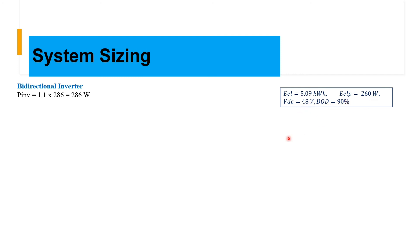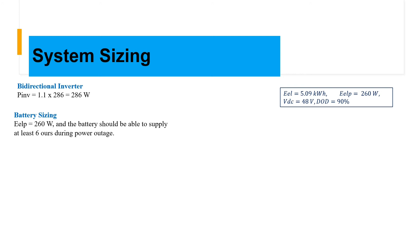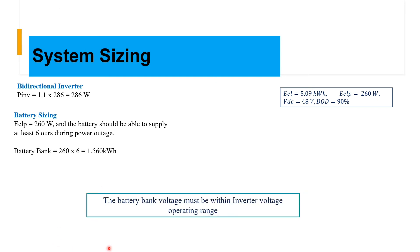We are using a DC system voltage of 48 volts and a depth of discharge of 90%. The battery sizing is based on the essential load power of 260 watts — the battery should be able to supply the load for at least 6 hours during a power outage. Therefore, 260 watts times 6 hours gives us 1.56 kilowatt-hours. You can then go to suppliers and find a battery with this specification, ensuring the battery bank voltage is within the inverter's operating voltage range.